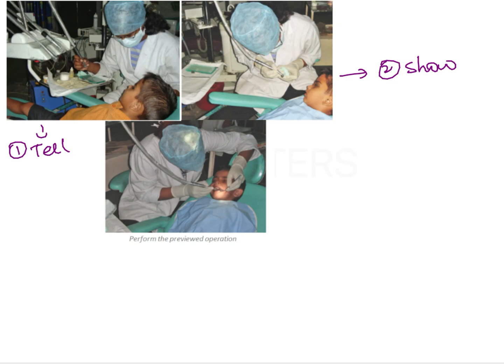In the 'Show' step, we demonstrate using visual, auditory, olfactory, and tactile sensations that will be experienced during the procedure. For example, if you are going to use an air rotor, you show the child how it works so they become familiar with the sound. Similarly, if you are placing a mouth mirror, you show it to the patient and explain: 'This is a mirror, I'm only going to view your teeth with it.' All instruments and procedures are demonstrated so the child has no fear when they are actually used.